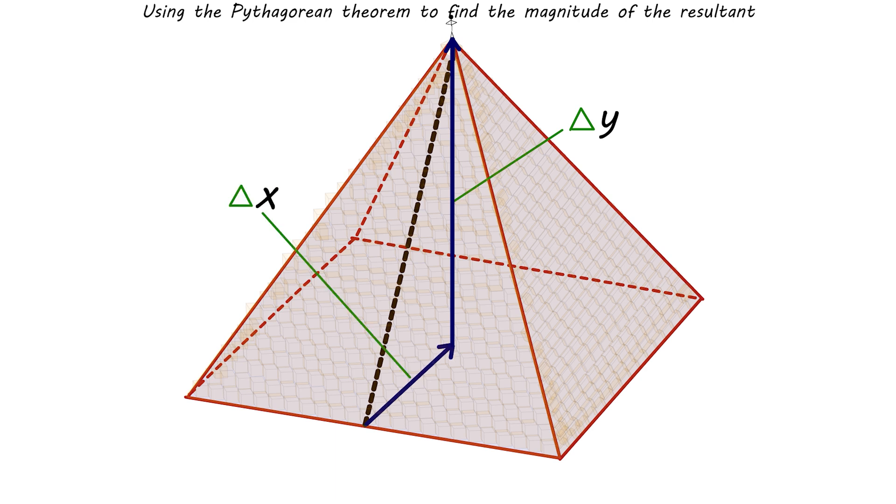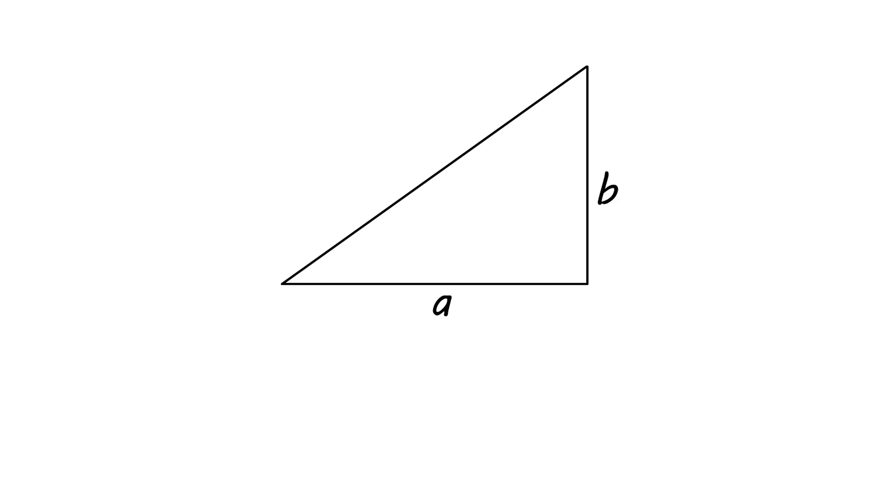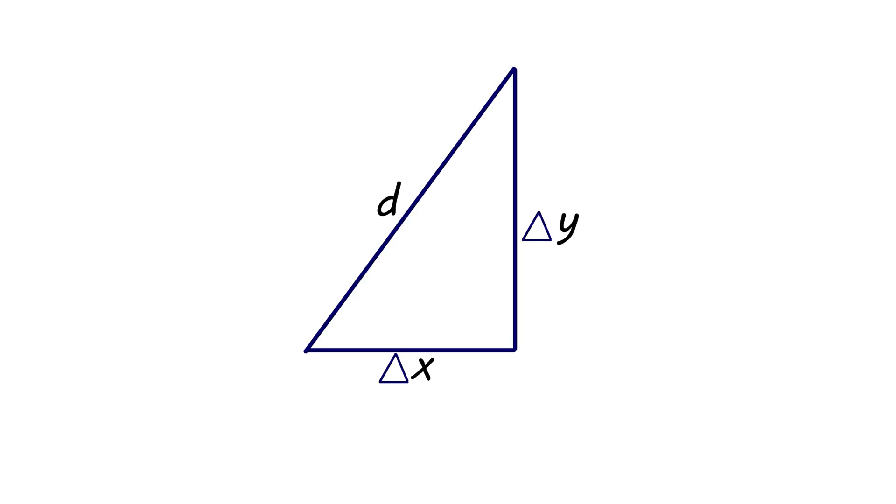Notice that these two vectors are perpendicular and form a right triangle with the displacement, d. The Pythagorean theorem states that for any right triangle, the square of the hypotenuse, the side opposite the right angle, equals the sum of the squares of the other two sides, or legs. Pythagorean theorem for right triangles: c square equals a square plus b square.